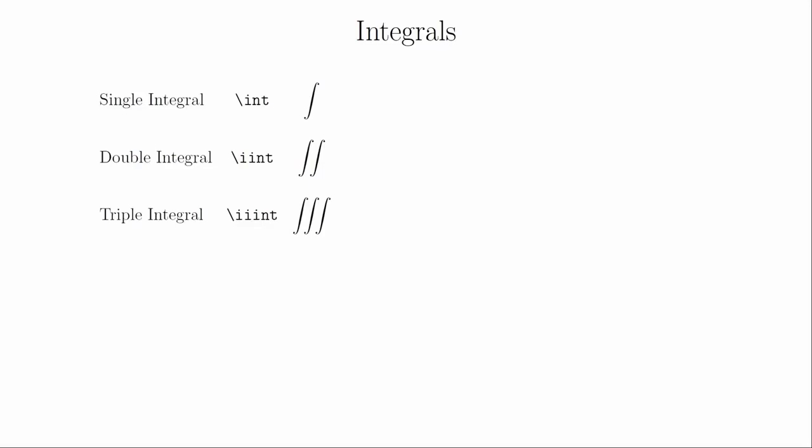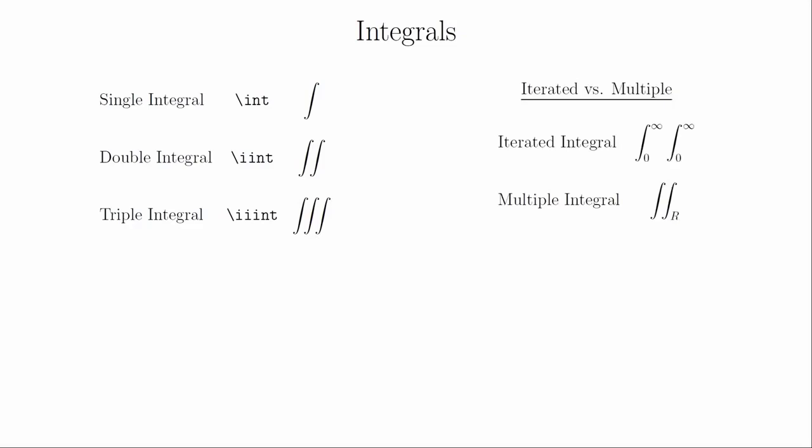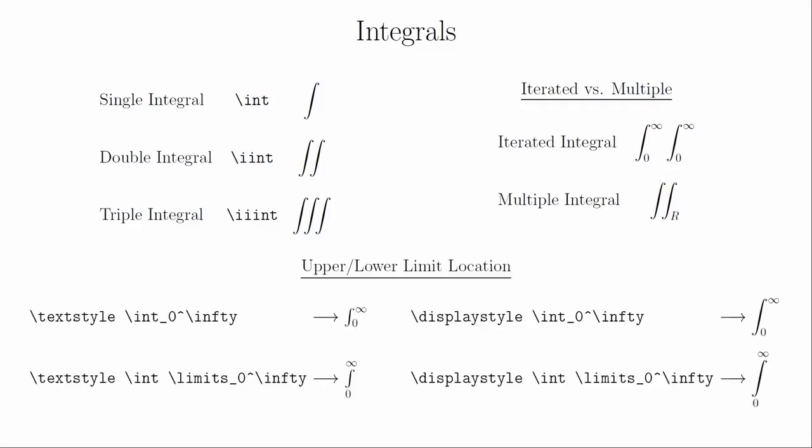Integrals behave like sums — you can put the limits above and below in exactly the same way. A single integral is \int, a double integral is \iint, and a triple integral is \iiint. There is a distinction between double or triple integrals and iterated integrals — the double and triple integral symbols are just single symbols with a single space to put information above or below. If you have an iterated integral with limits on each part, you will need to write them as multiple single integrals. You can also have more control over where the limits go — using the \limits command shifts them to be above and below the integral sign.